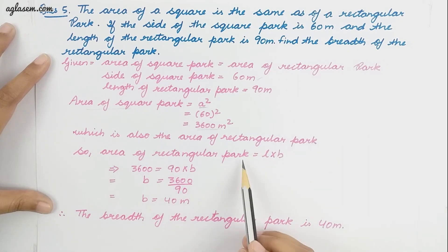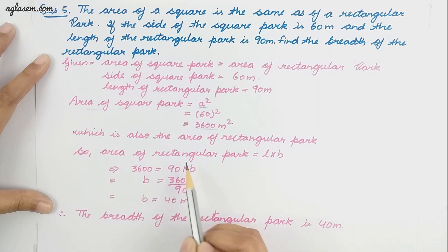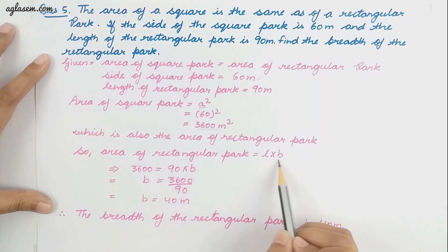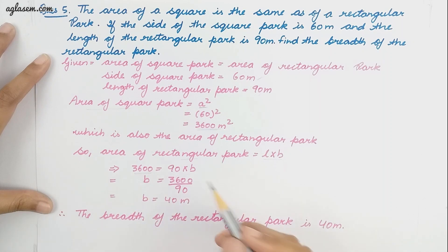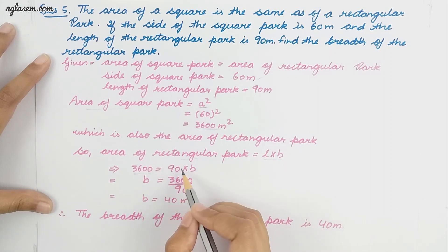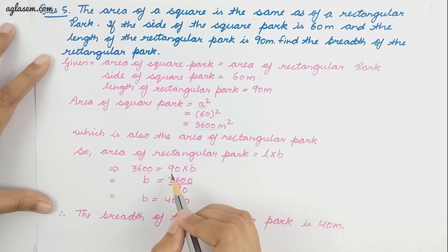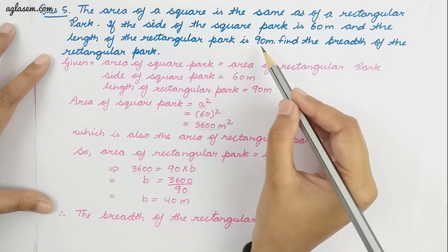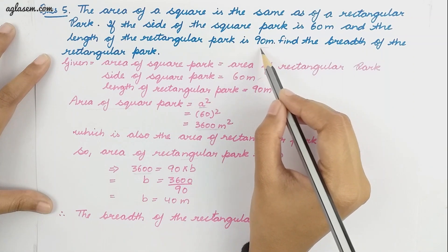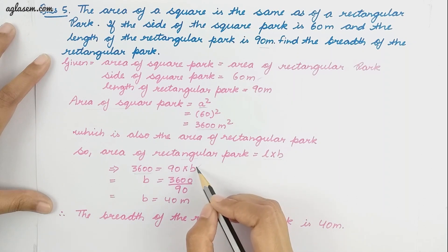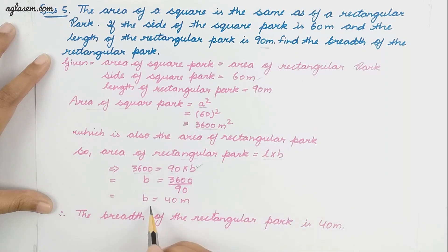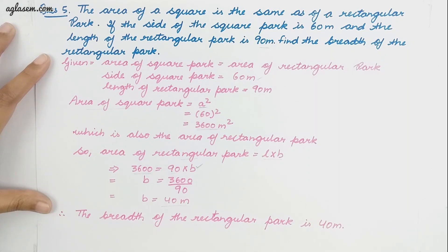For the rectangular park, the formula for area is length into breadth. So 3600 equals 90 into B, where 90 is the length. From this we get the breadth equals 40 meter. Therefore, the breadth of the rectangular park is 40 meter.